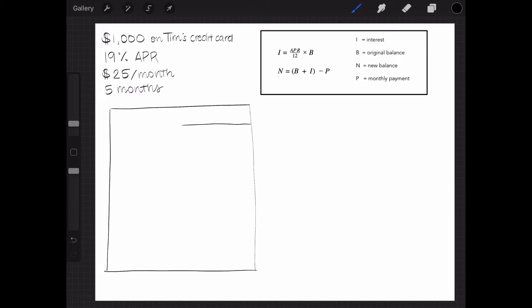I can make a mini amortization table for the first five months, which will outline how much interest and balance Tim will have for his credit card each month.